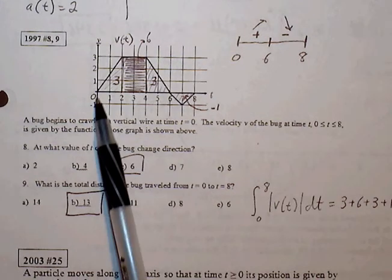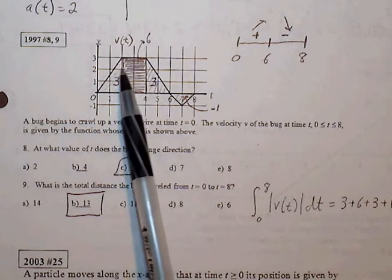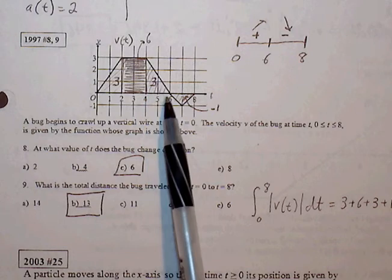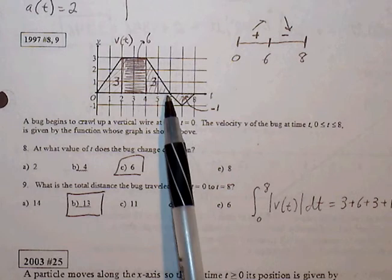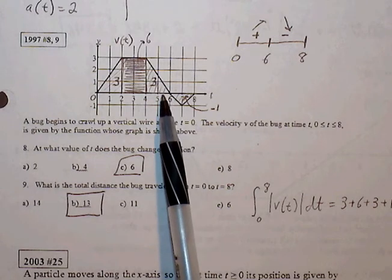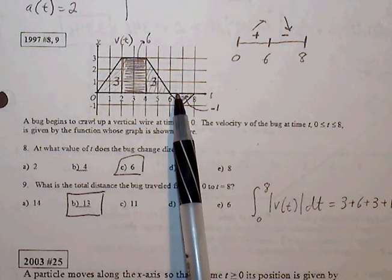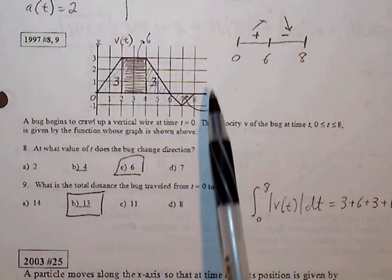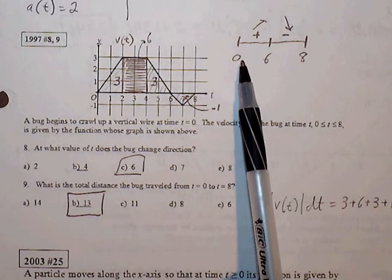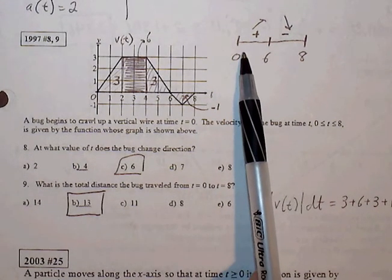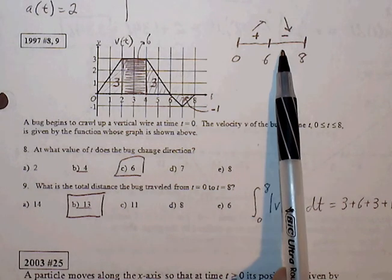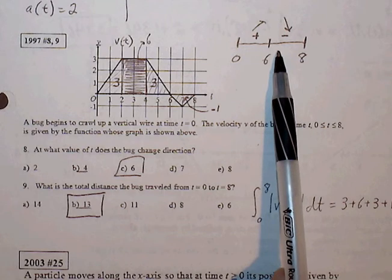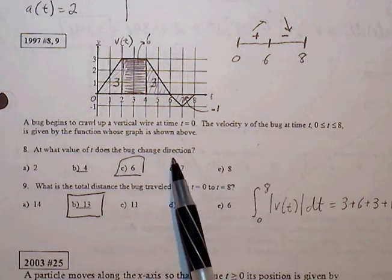If we're looking at the velocity function, the direction change will occur if there's a sign change from either positive to negative or from negative to positive. And the only sign change that we see that crosses the x-intercept is at 6. Anything above the x-axis represents positive velocity. So we know that a bug is crawling upwards between 0 and 6. And after 6, between 6 and 8, the bug is crawling in a downward direction. So at 6, there's a change in direction.